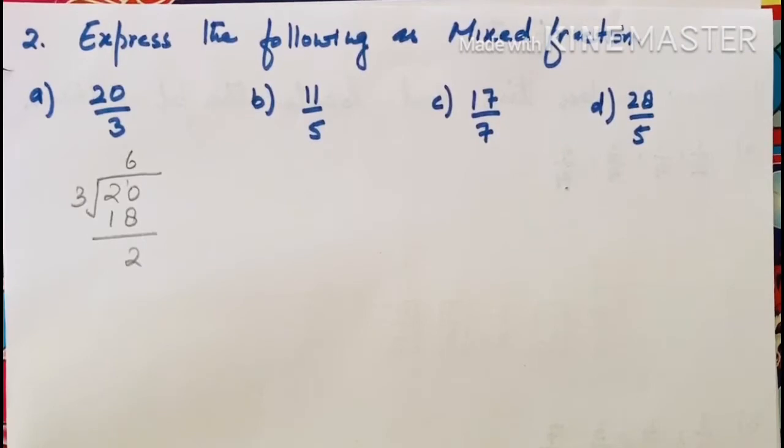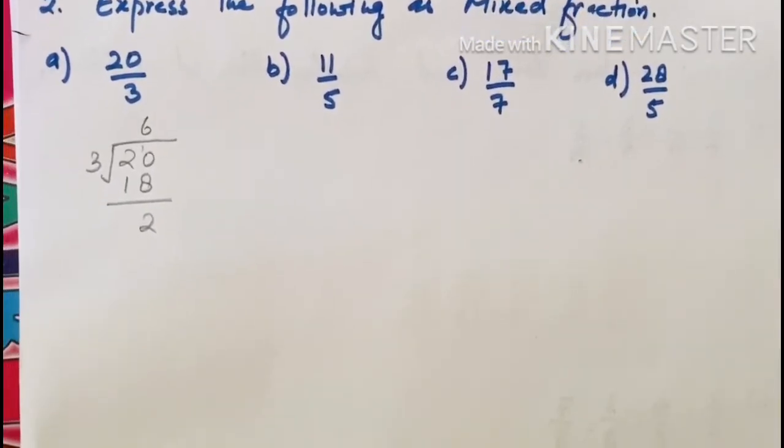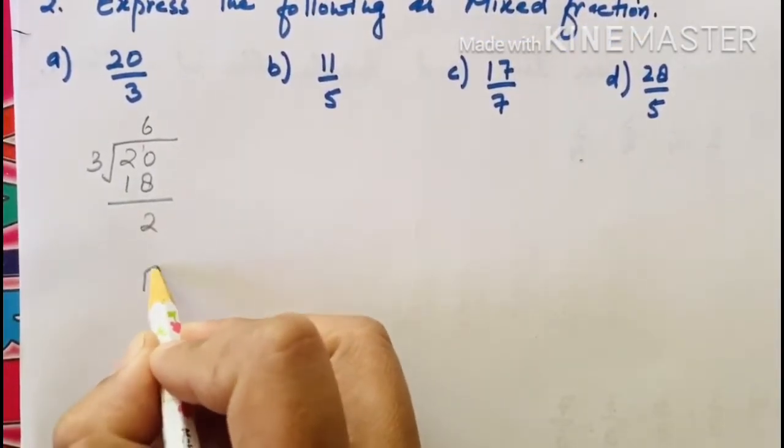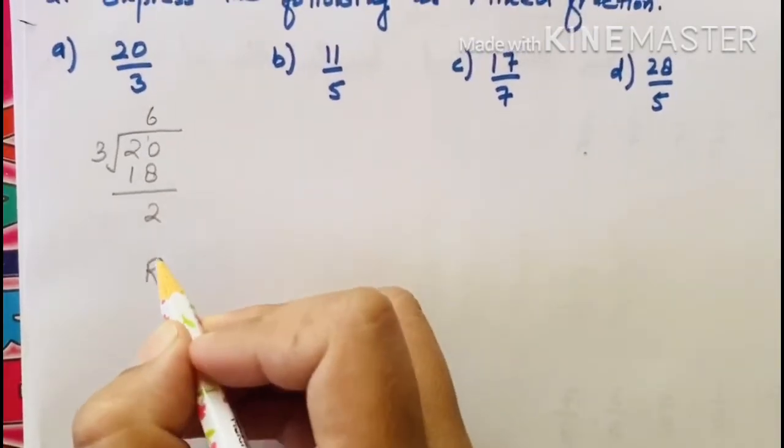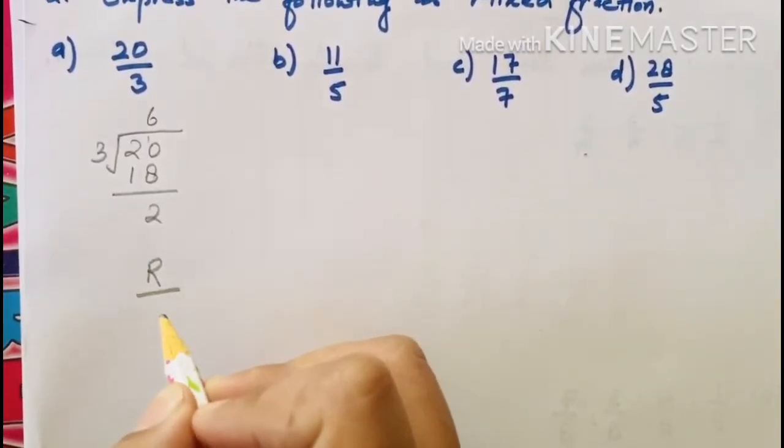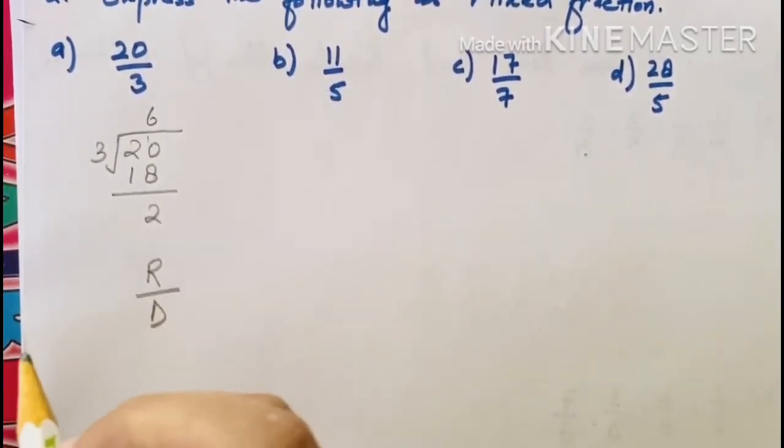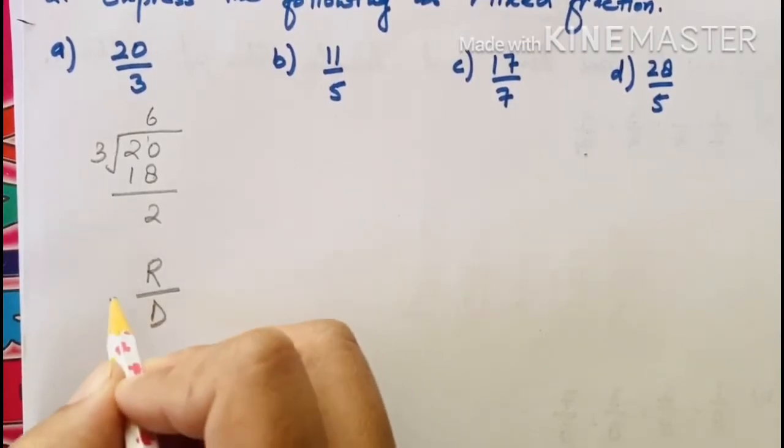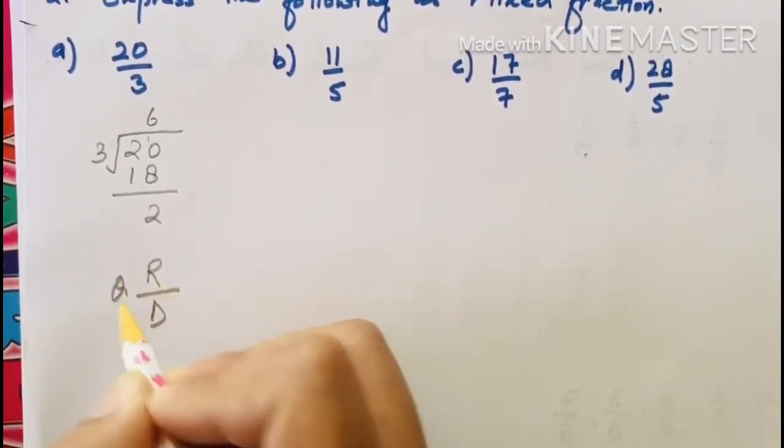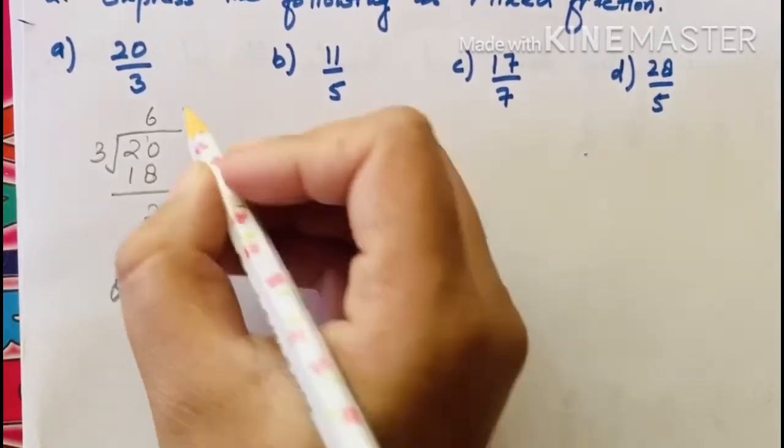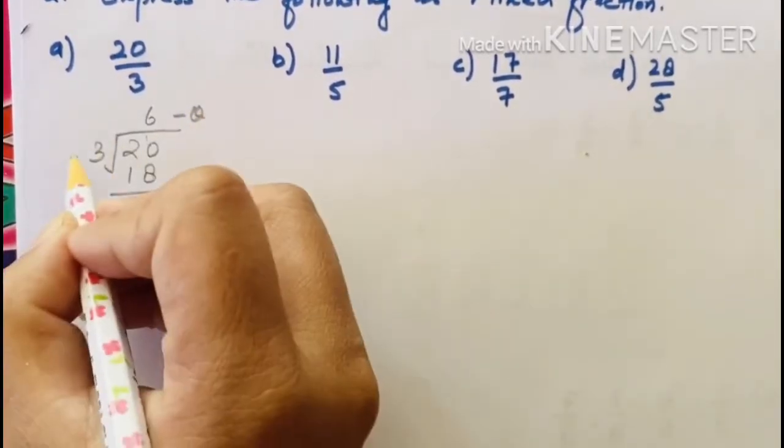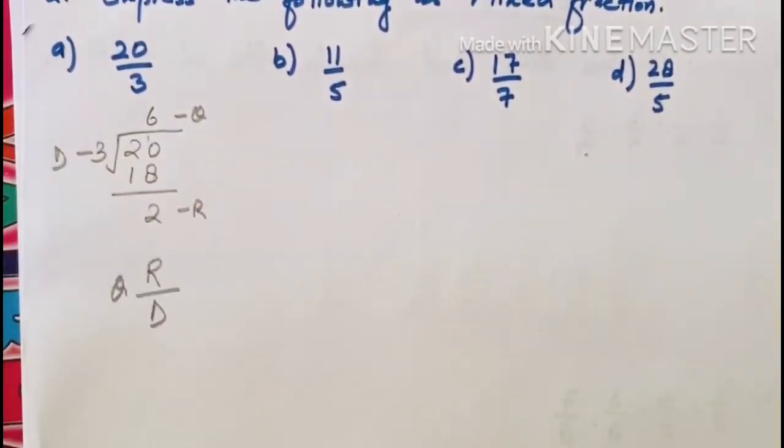To convert this improper into mixed fraction, then what do you need to do? In numerator place, remainder to write. In denominator place, divisor to write. And whole number to write on the quotient. This is your remainder, this is your quotient and this is your divisor.